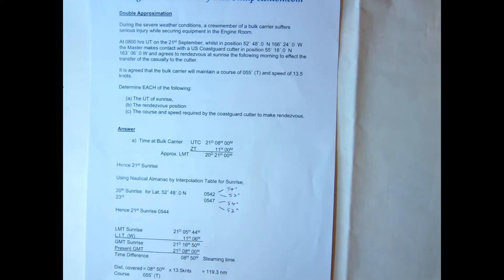We've made contact with the Coast Guard Cutter, position given, and we're going to rendezvous at sunrise the following morning to transfer the casualty. Now it's agreed that the bulk carrier will maintain its course and speed, so we need to determine the universal time of sunrise, the rendezvous position, and the course and speed required by the cutter to make that rendezvous position.